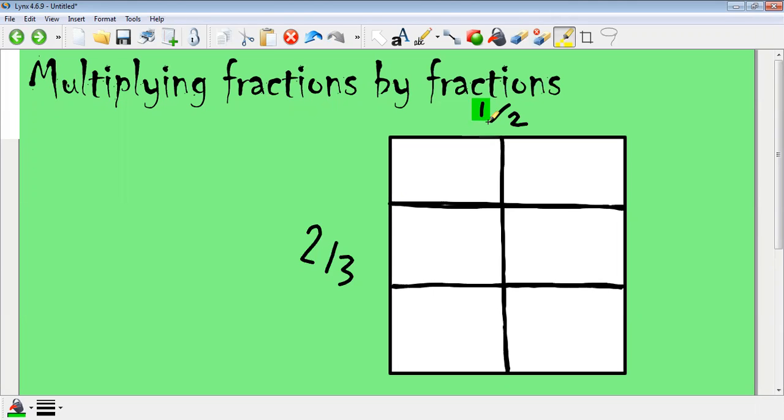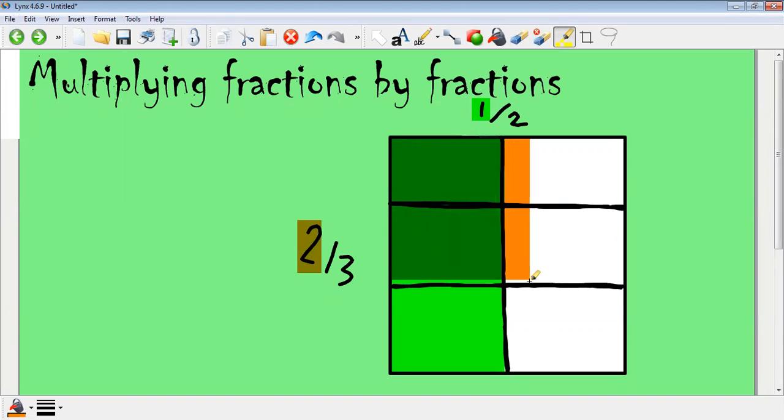So what we do is I need you to shade from the top left corner. We're going to have to shade a half of the diagram, so I'm going to shade my half in. Then what you need to do is you need to shade two thirds of the diagram, again starting from the top left. You'll notice when I use two different colors at home it will help you because where they overlap is going to be your answer. You can see where it overlaps is becoming dark green.